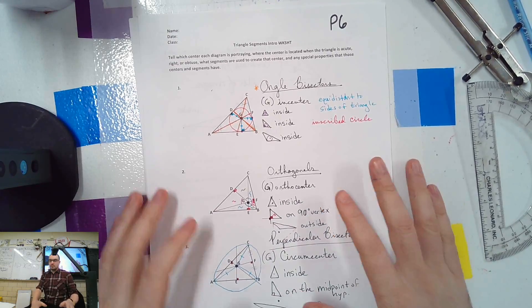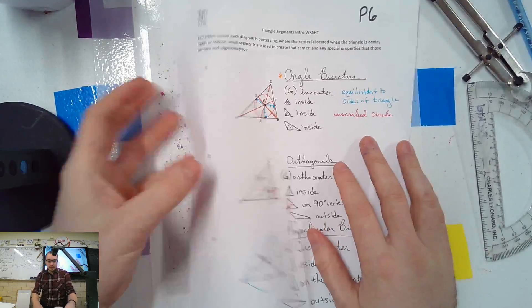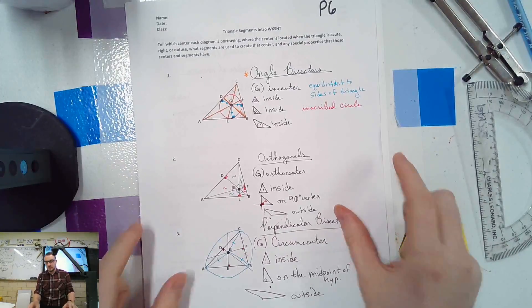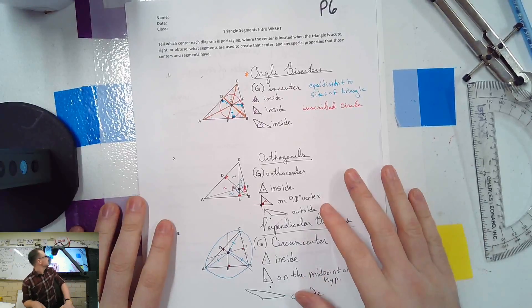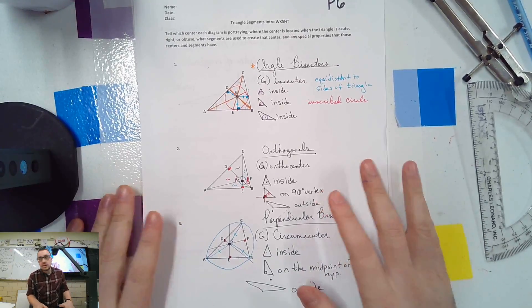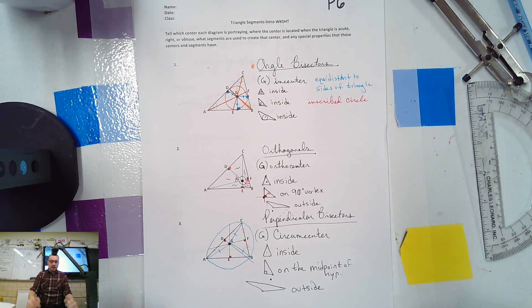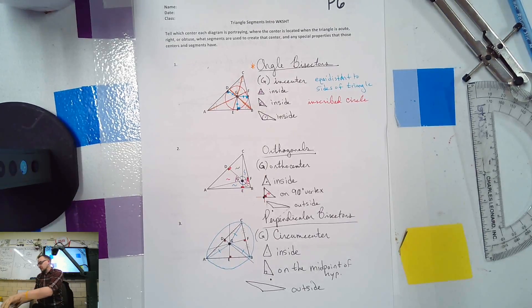So yesterday we finished up. So yesterday, what we talked about were angle bisectors, orthogonals, perpendicular bisectors, et cetera.